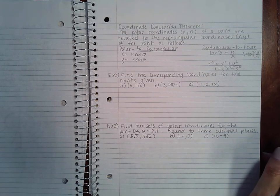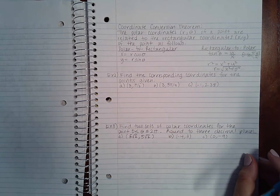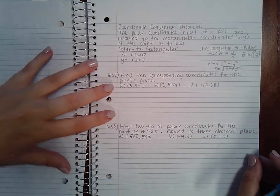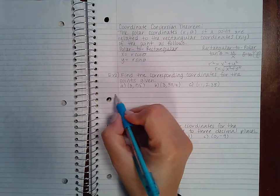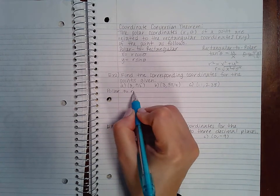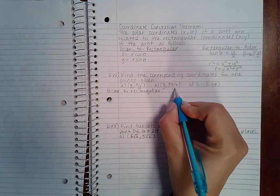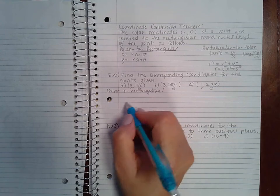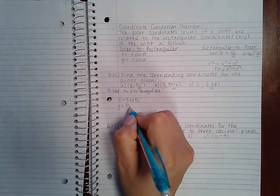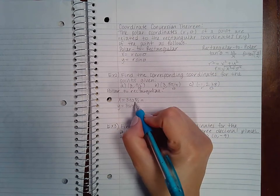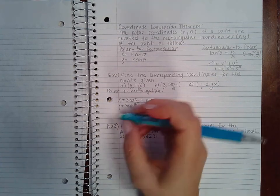So in example two, it says find the corresponding coordinates for the points given. So in this particular case, we want to take all of these polar coordinates and convert them into rectangular. So we want to go from polar to rectangular, which means we need to do, this is r and θ. So for A, we're going to have x equal to 3 cosine of π/2. Y is going to equal 3 sine of π/2. The x value at π/2 is 0, and the y value at π/2 is 1 times 3, which is 3. So this will be the same as (0, 3).